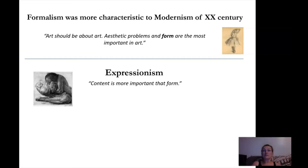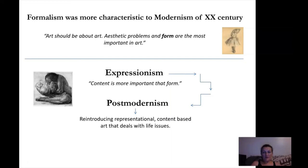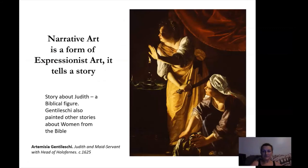To summarize: formalism was more characteristic of modernism in the 20th century. The main motto is 'art should be about art' — aesthetic problems and form are the most important. In expressionism, artists believe that content is more important than form. This issue brings us to postmodernism. When you take more advanced art history classes, you'll learn more, but basically in postmodernism we see the reintroduction of representational and content-based art that deals with life issues, and that's what we see today in art.